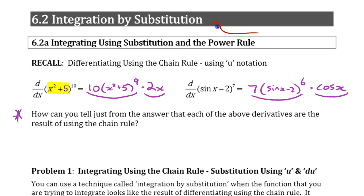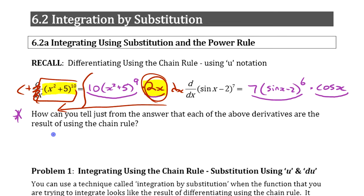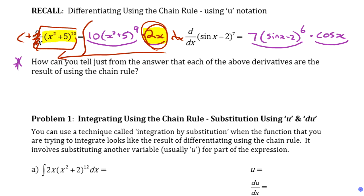Substitution doesn't work all the time. The chain rule worked anytime you had a composition of functions, but substitution is only going to work when what you have looks like the result of the chain rule. When we're doing the derivative, this extra piece appeared. When we go the other way — doing the integral — this extra piece is going to disappear, and that troubles some people, but you'll see why.